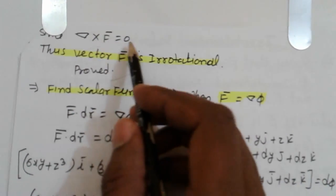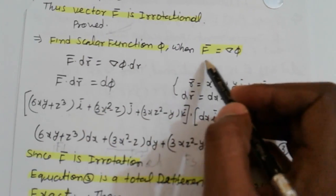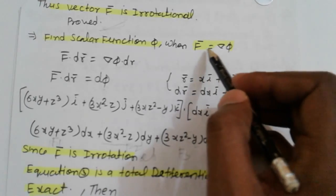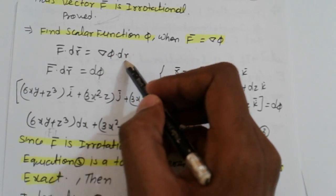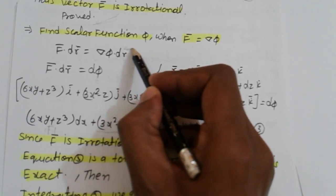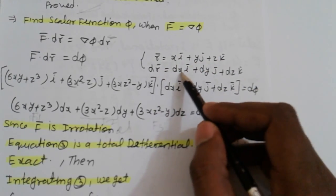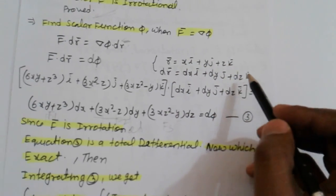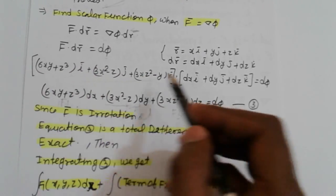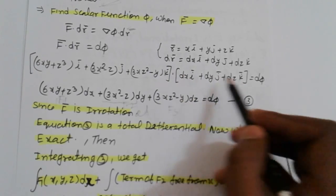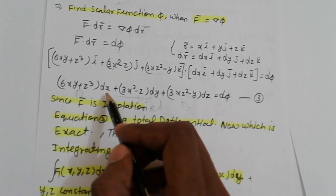Since nabla cross F equals 0, the vector F is irrotational — first part proved. Next, find the scalar function phi. Since vector F equals nabla phi, taking dot product: F dot dr equals nabla phi dot dr equals d phi. Here r equals xi + yj + zk, so dr equals dx i + dy j + dz k. Substituting the value of vector F and dr and taking dot products gives d phi.